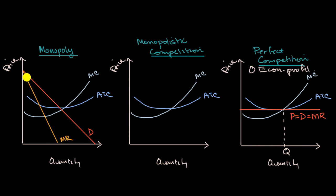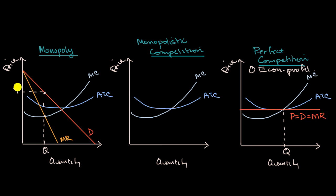In that situation, your marginal revenue is going to go down twice as fast, because as you go further down the demand curve, you're lowering the price for everyone. The rational quantity to produce is where marginal revenue intersects marginal cost, and the price at that quantity goes to the demand curve. This monopoly firm is able to get quite a nice economic profit because the average total cost at that quantity is lower, so on a per-unit basis they make that margin times the number of units.